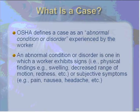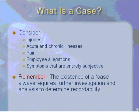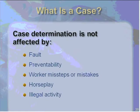A case is an abnormal condition or disorder experienced by the worker. The definition OSHA uses is one in which a worker exhibits signs or subjective symptoms. It may be just as little as a person saying 'I have pain in my wrist' with no physical signs — the fact that they have subjective symptoms makes it a case. You should consider injuries, acute and chronic illnesses, just pain, employee allegations, and symptoms that are entirely subjective. The fact that you have a case does not by itself mean it's recordable.